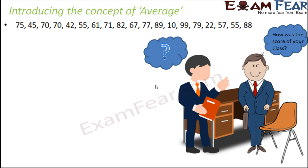Something like this — the performance of my class was somewhat like this: 75, 45, 70, 70, 42, 55. Do you think he is going to do that? Or do you think that is a wise way of telling the principal how was the performance of the class?